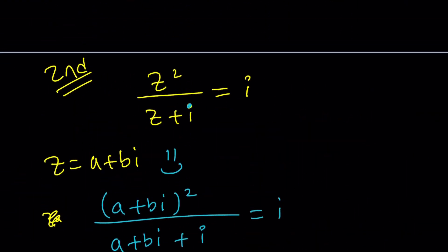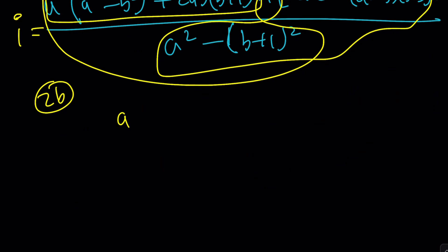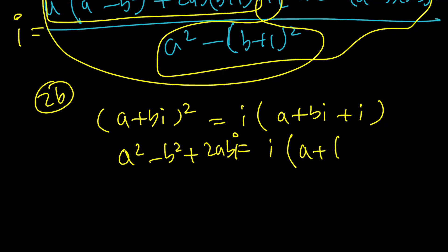So after replacing z with a plus bi, we should be getting something like this. And of course, I cross-multiplied because that would be easier. Now, if you expand this, you're going to get that. If you expand this, oops, there should be an i here. You should be getting something like i times (a plus (b plus 1)i). And then when you multiply, you're going to get a squared minus b squared plus 2abi equals, again, we'll get an i squared scenario here, negative (b plus 1) and then plus ai.